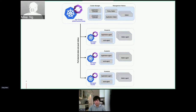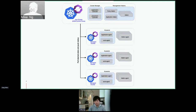On the managed cluster side, there's a cluster agent operator which contains the work agent. It pulls the placement decision from the hub cluster and launches workloads to the related managed cluster. It also periodically pushes the status of the managed cluster back to the hub cluster. With this architecture, we avoid vendor lock-in because the APIs are not tied to any cloud providers or proprietary platform. You can have your hub cluster initialized on any Kubernetes provider or platform, and you can have many different clusters from different providers join that hub cluster with no functional limitation.